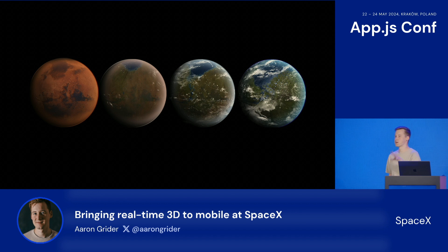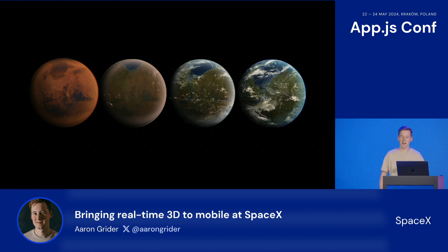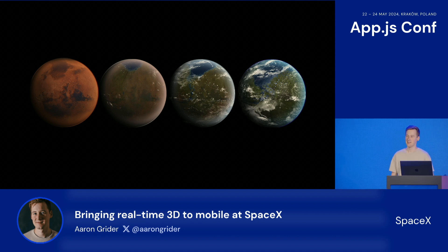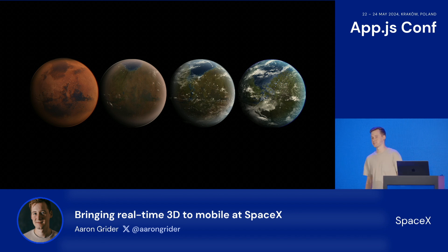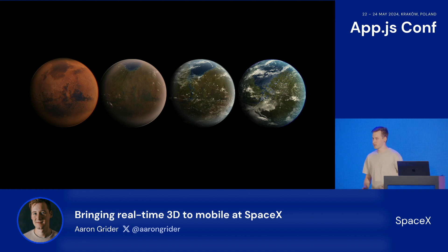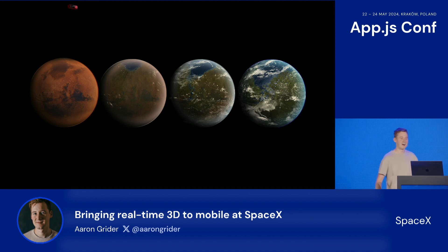On that mission, we're launching Falcon rockets and docking Dragon capsules to the International Space Station. We're developing Starship, which is going to be the first fully reusable rocket designed to establish a sustainable presence on Mars. And we also put a Tesla into space once, which is kind of cool. So we're pretty busy.